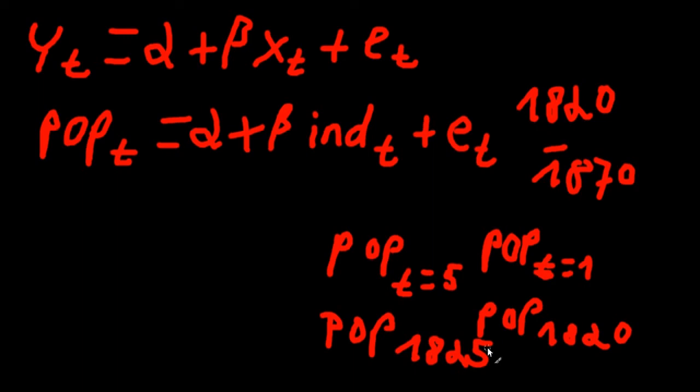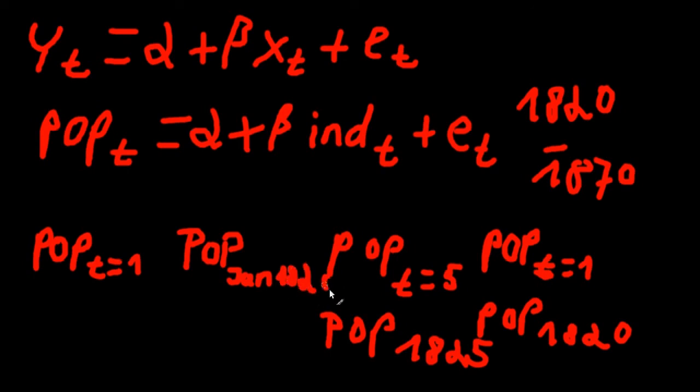Of course, your data doesn't have to be on a yearly scale. For example, your data could be on a monthly scale. So if your data is on a monthly scale, then population at time t equals one would be the population in January 1820. And the population at time t equals five would be the population in May 1820.